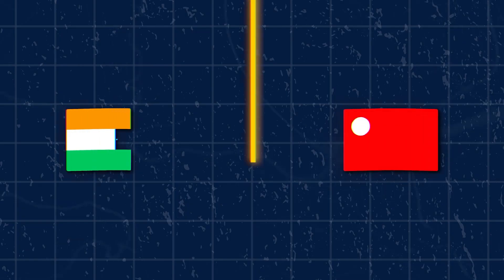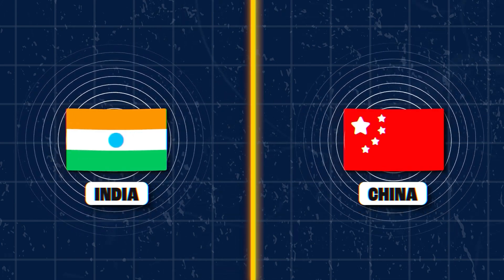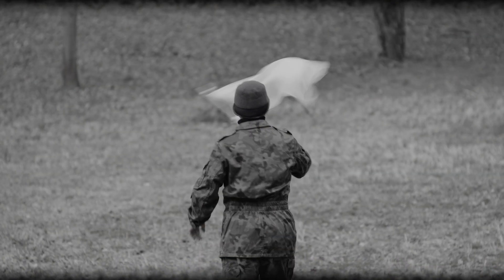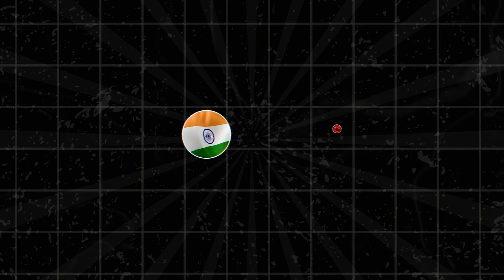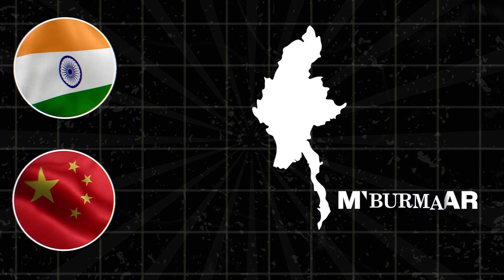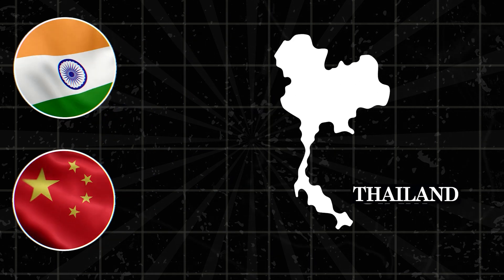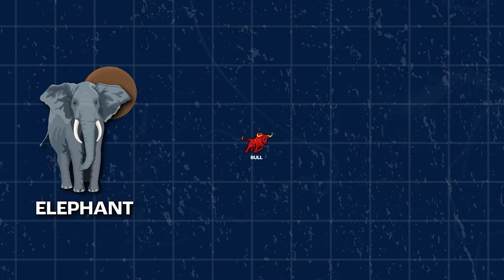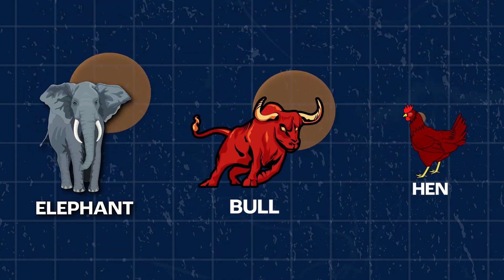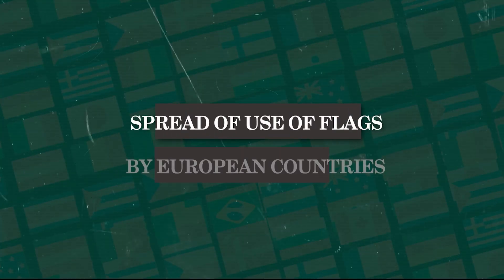Flags also seem to have been used in India, as in China, for signalling. There is an instance of a white flag being used as a signal for a truce as early as 1542 CE. Indian and Chinese usage spread to Myanmar, Burma, Siam — now Thailand — and other parts of Southeast Asia. Flags with a background of white, yellow, or black silk are mentioned, with devices such as an elephant, a bull, or a water hen embroidered on them in gold.